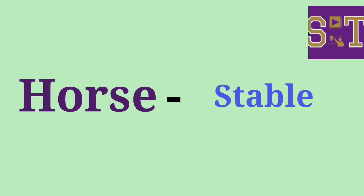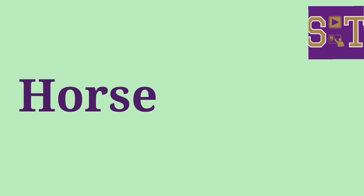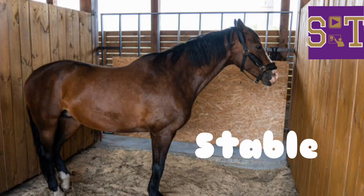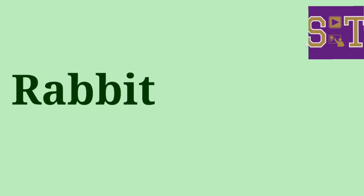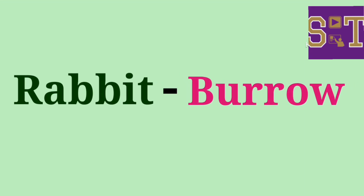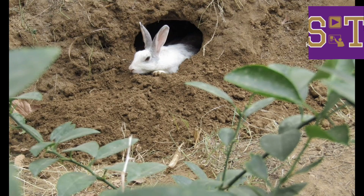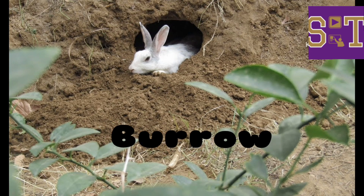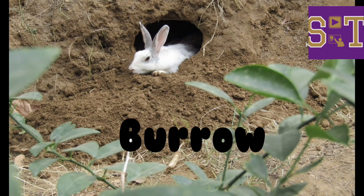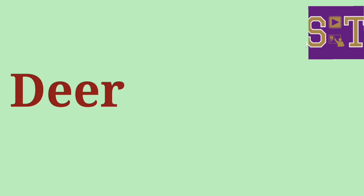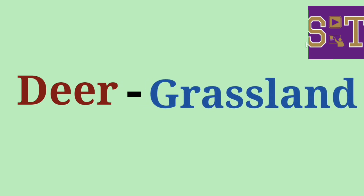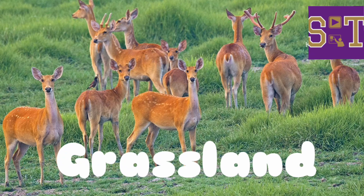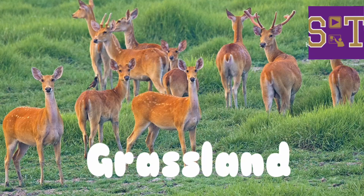Horse — stable. A horse lives in a stable. Rabbit — burrow. A rabbit lives in a burrow. Deer — grassland. A deer lives in grassland.